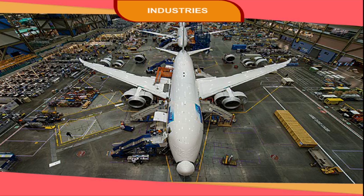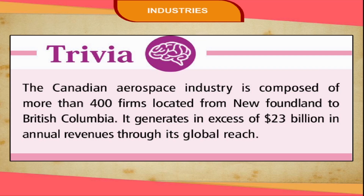USA is the major producer and exporter of aircrafts in the world; Russia occupies the next position. UK, France, Italy, Canada, Australia, Japan, and China are other important manufacturers. In India, the aircraft industry is located at Kanpur, Nasik, Bengaluru, Lucknow, and Korapur. Trivia: the Canadian aerospace industry is composed of more than 400 firms located from Newfoundland to British Columbia, generating in excess of 23 billion dollars in annual revenues.